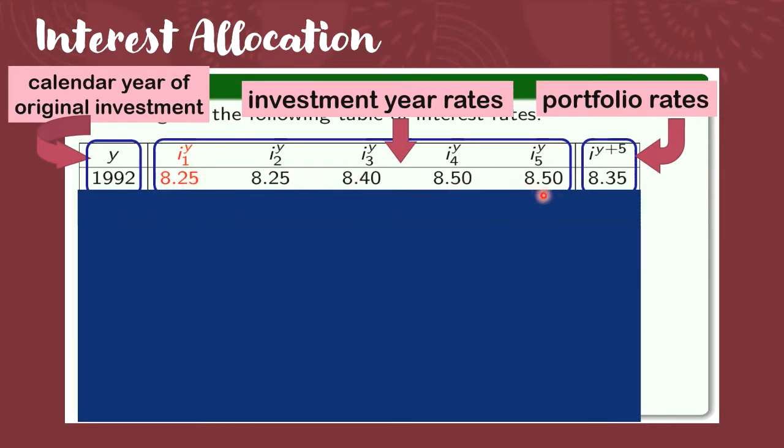Okay? So limang taon na investment year rates ang gagamitin doon sa investment mo noong 1992. Hindi palaging five ha, so depende. So in this example, we have a five-year segregation period. Ibig sabihin limang taon kayo nakahiwalay from the main fund. And then after five years, saka kayo ilalagay o isasama doon sa main fund. So nang ibig sabihin kapag nahalo na kayo sa main fund, portfolio rates will now be applied to your investment.